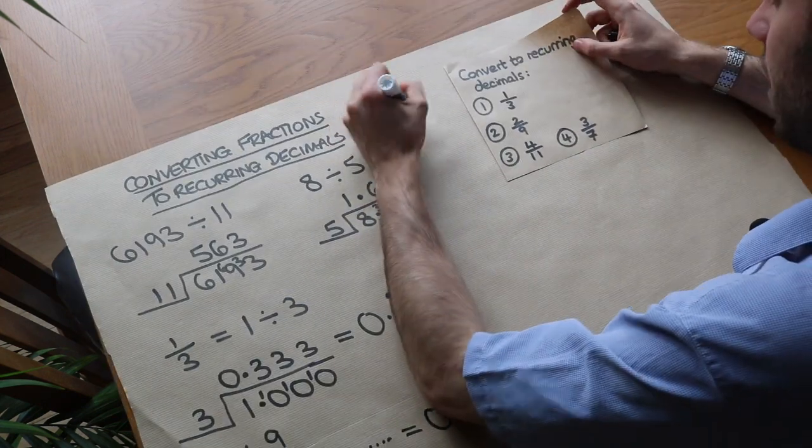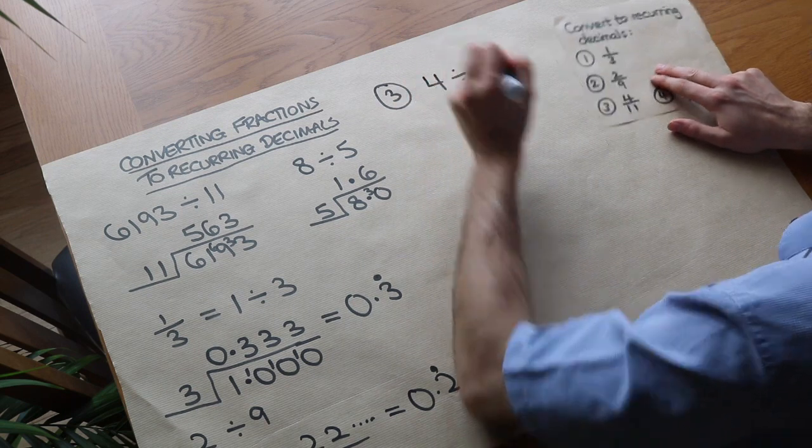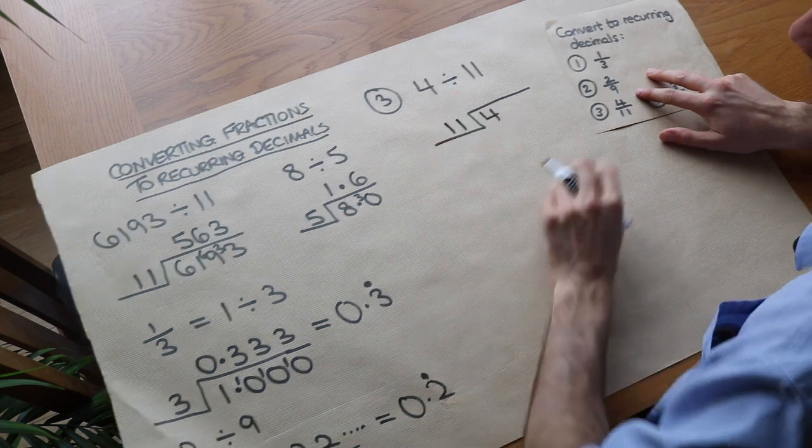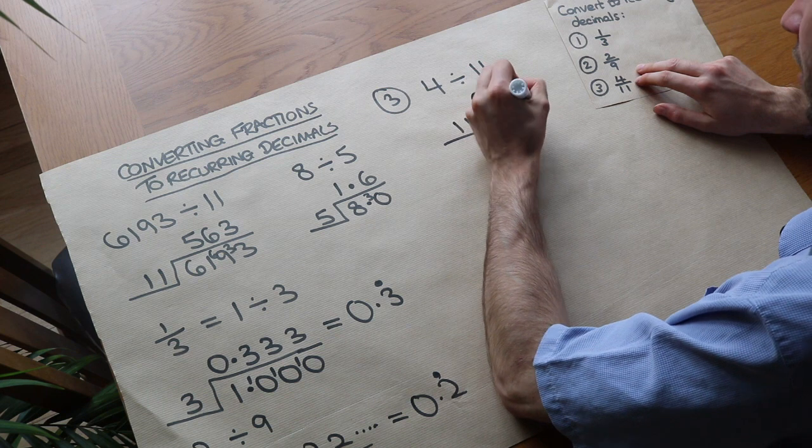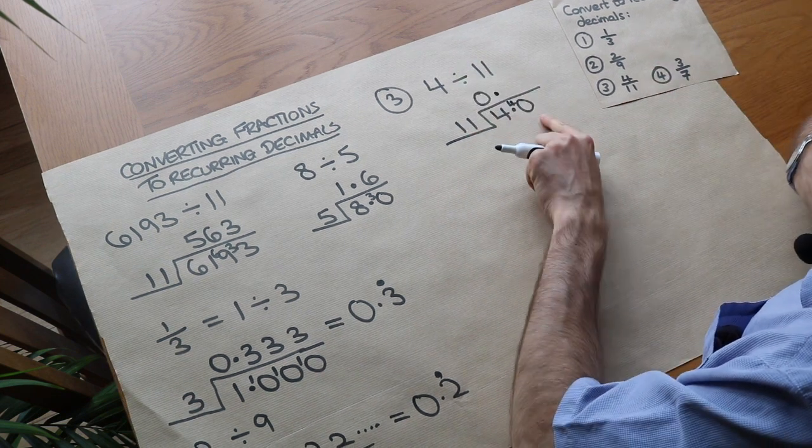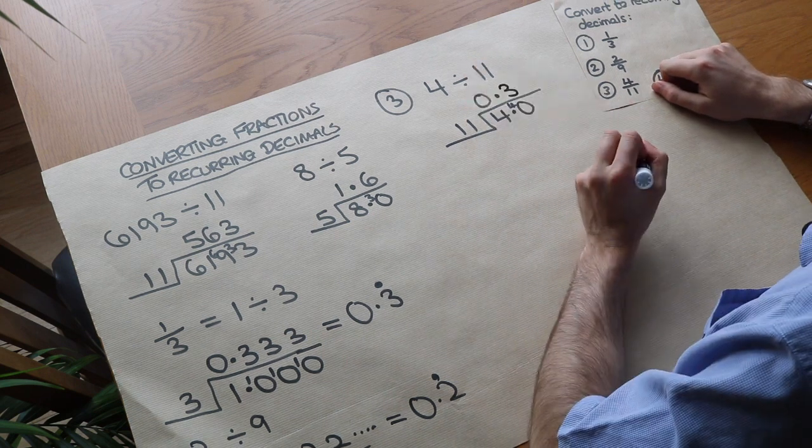What about the next one, question 3? So we've got 4 elevenths, which is 4 divided by 11. So we do 4 divided by 11. How many times does 11 go into 4? 0 times remainder 4. So put 0.0, put the remainder 4 there. And we need the decimal point there. How many times does 11 go into 40? Where it goes in 3 whole times, remainder 7.